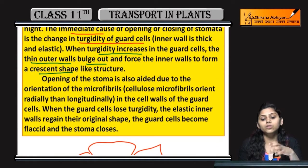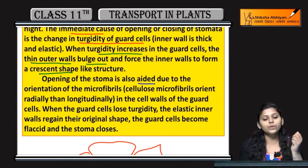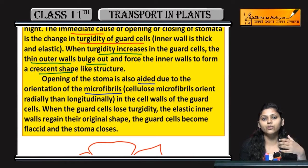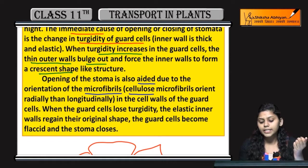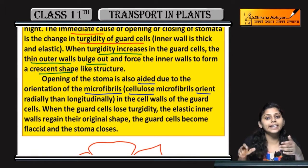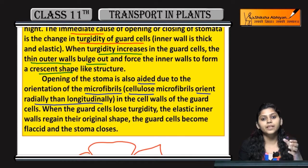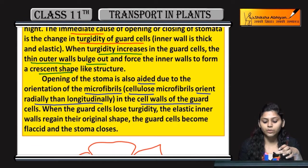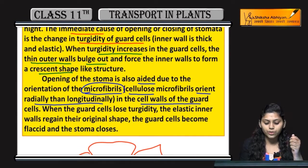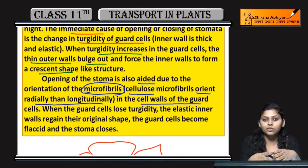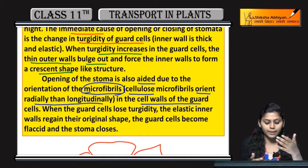Jo opening hai stomata ki, is also aided due to the orientation of cellulose microfibrils. Cellulose microfibrils jo orient karti hain radially rather than longitudinally in the cell walls of the guard cells. Guard cells mein microfibrils hote hain — unki orientation ki wajhe se bhi jo opening and closing hai stomata ki, woh control hoti hai.